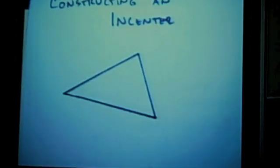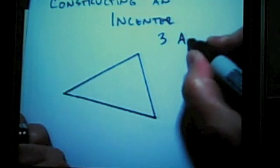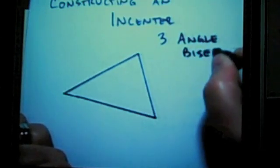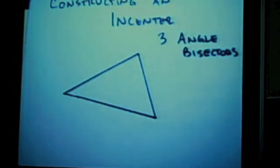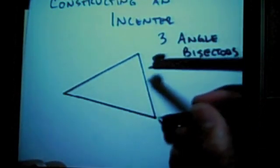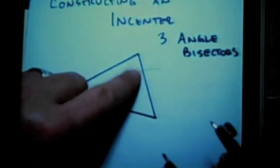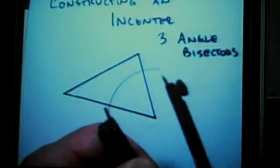An in-center is the result of combining three angle bisectors. You'll remember from our previous lessons that an angle bisector results when you take your compass and make some arc. It doesn't even matter what arc it is, but from the points of intersection of that arc, you're going to effectively construct a perpendicular bisector.